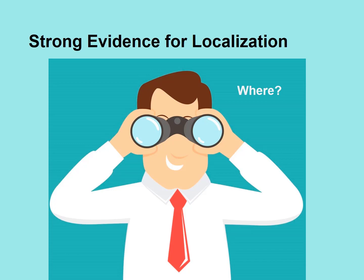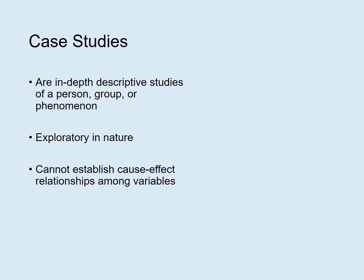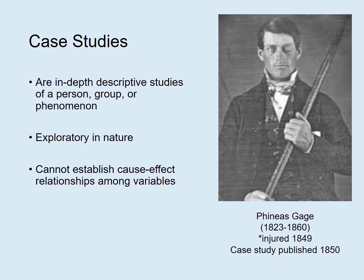The first convincing evidence of localization of function came from case studies, which are in-depth, descriptive studies of people, groups, or phenomena. They are exploratory in nature and cannot establish cause and effect, but they can kick off an inquiry for future research. You have likely heard about Phineas Gage, who in 1849 received a terrible injury to his skull. The case study published in 1850 established a possible relationship between damage to the frontal lobe and changes in personality.